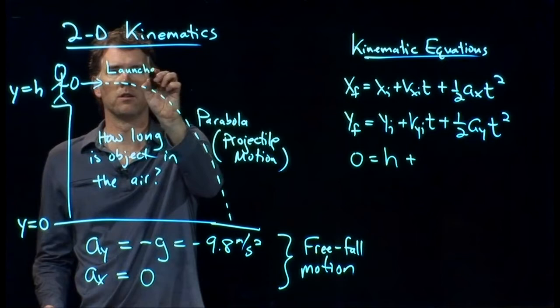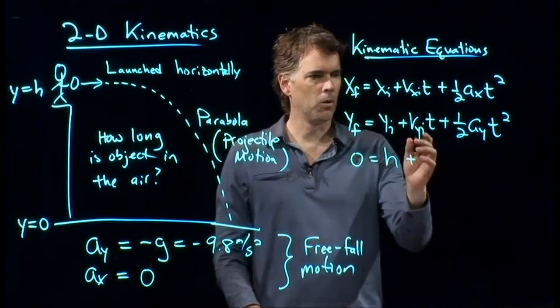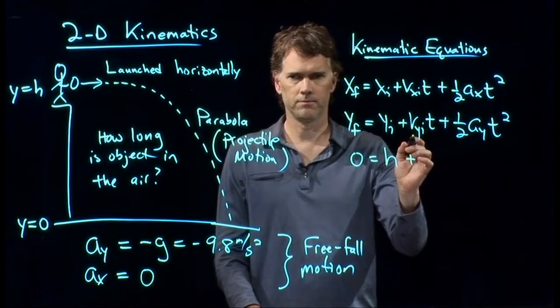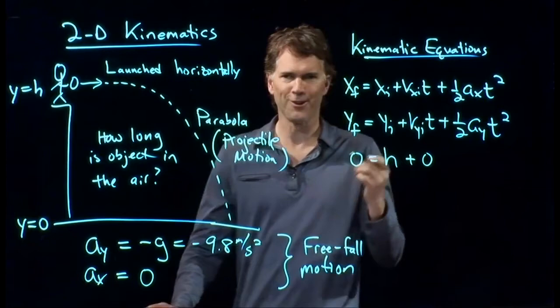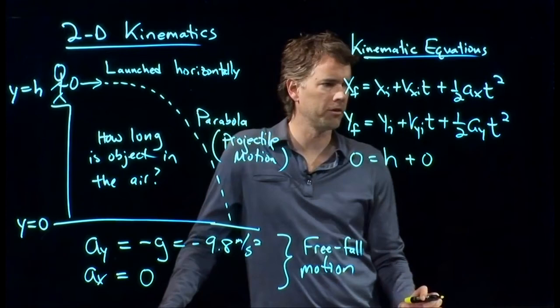What about v_y initial? And let's be clear here that we are going to launch this object horizontally. Okay. That's kind of key in our discussion at this point. If we have launched this thing horizontally, what is the vertical component of the velocity? Yeah. V 0. V 0, right? It's sort of actually pretty hard to launch something perfectly horizontally. But let's say we do launch it perfectly horizontally. Then that term is 0 as well.